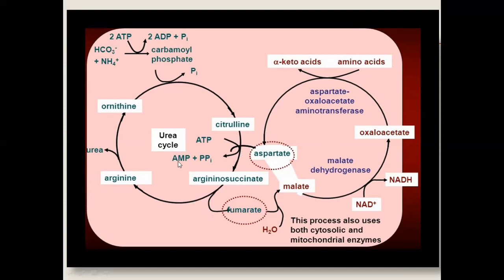The urea cycle takes place inside the mitochondria and cytosol. This particular reaction — arginosuccinate giving rise to fumarate — takes place in the cytoplasm, so the fumarate is present inside the cytoplasm. The Krebs cycle takes place inside the mitochondria, while some urea cycle reactions take place inside the mitochondria and others in the cytoplasm.